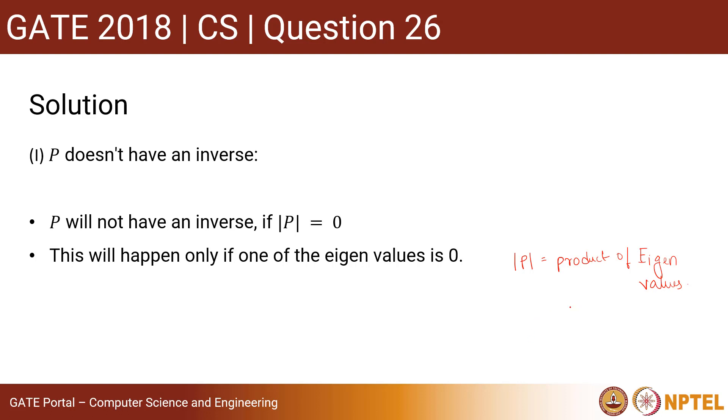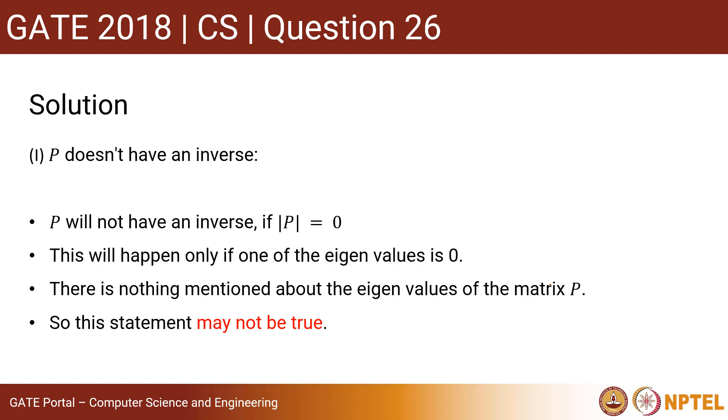If one of the eigenvalues is 0, then only the determinant will be equal to 0. Now, there is nothing mentioned about the eigenvalues of the matrix P in the question, so we cannot really say that one eigenvalue of the matrix will be 0. So this statement may not be true.